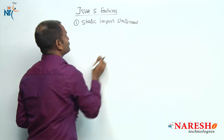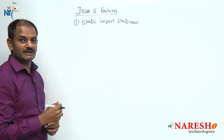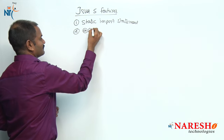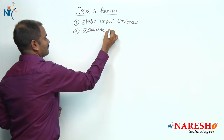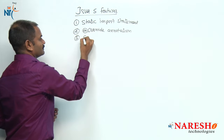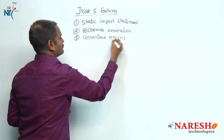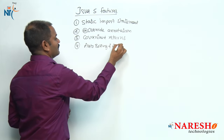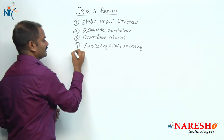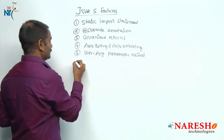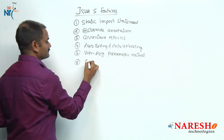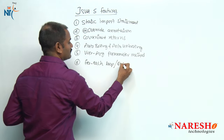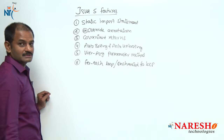We know we have the import statement, but from Java 5 onwards we have the static import statement. The second feature is the @Override annotation. The third one is covariant returns. The fourth one is auto-boxing and auto-unboxing. The fifth one is the varargs parameter method, and the sixth one is the for-each loop, also called the enhanced for loop.